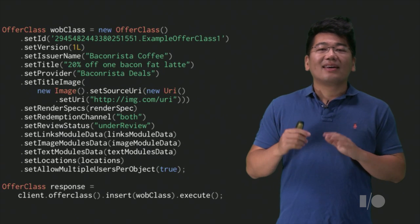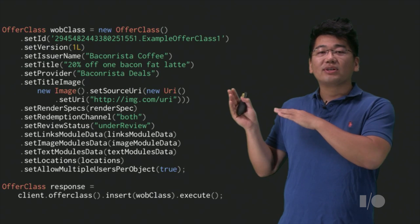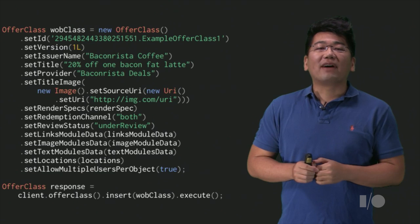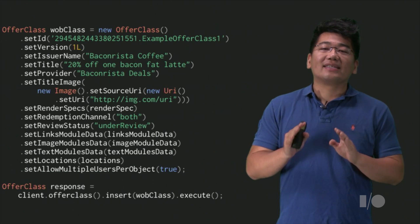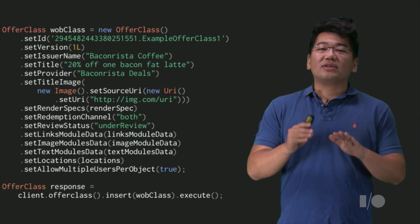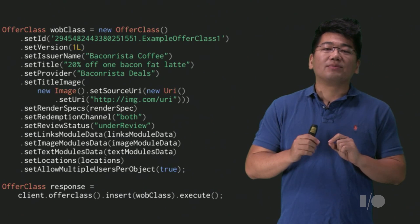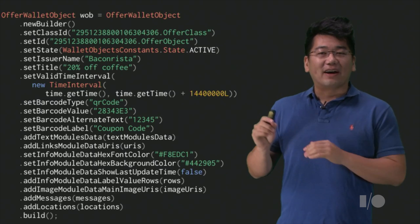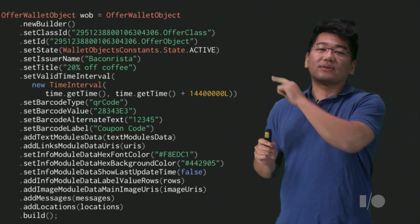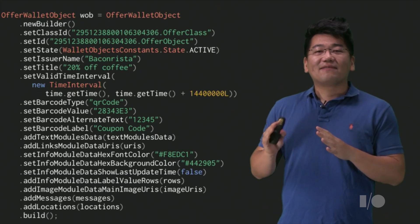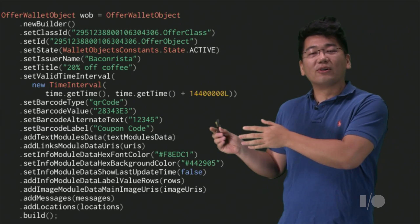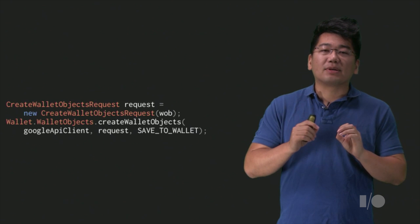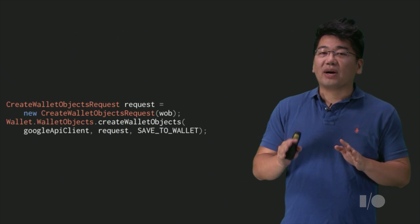First, we need to create the class. This code defines an offer class. We set the merchant and some offer details, some images, some subsections, and lat-long geolocations. Finally, we insert the class. Inserting the class needs to use a server-side REST API. Once you've created and inserted the class, you can create the object data in your Android app. This may look like a big wall of code, but it's your standard builder pattern defining an object. Here, I'm referencing the class I just created, overwriting some class fields and defining information specific to the user, such as barcode and messages. Once I have that, we can tie the object to a createWalletObjects call and tie that to an image button click, and we're done.